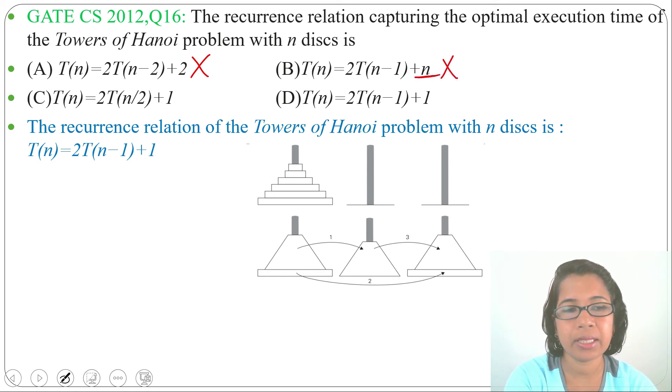Option C: T(n) = 2T(n/2) + 1, this is wrong. It is a divide and conquer recurrence while Tower of Hanoi is a decrease and conquer recurrence.